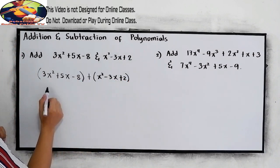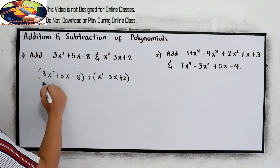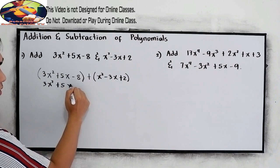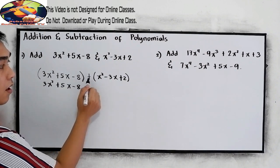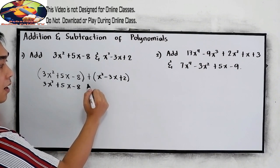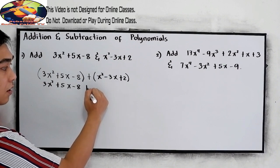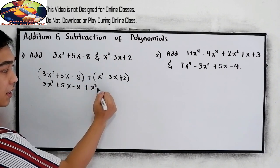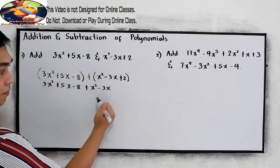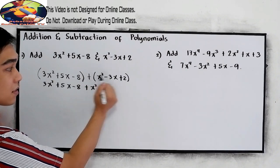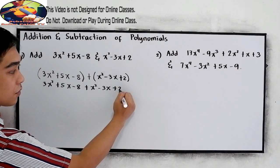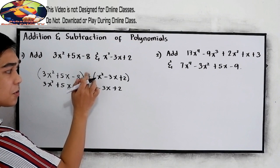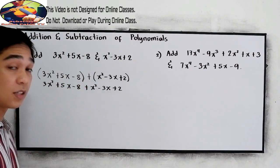Now we can remove the parentheses. This is 3x squared plus 5x minus 8. Positive times positive is positive x squared. Positive times negative is negative 3x. And positive times positive is positive 2. Or simply, if our operation is plus, just remove the parentheses.